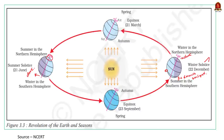There are also equinoxes which occur on 21st March and 23rd September, when the sunlight falls directly on the equator. At this position, neither pole is tilted towards the sun, so the whole earth experiences equal days and equal nights. So, never ignore the NCERTs because UPSC might pick direct statements from the NCERT books.